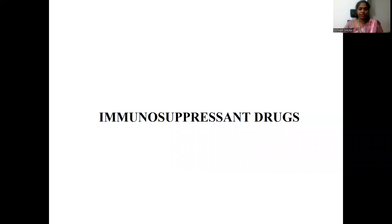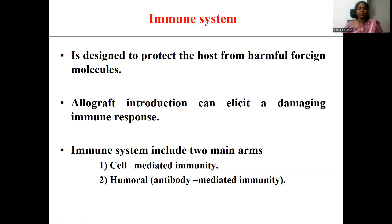In this topic we are going to discuss about immunosuppressant drugs. Immunosuppressant drugs are drugs which suppress the immune system. The immune system needs to be suppressed whenever there is allograft transplantation — the transplantation of an organ from a donor to a recipient. The recipient might recognize the graft as a foreign particle and try to elicit an immune response, bringing about rejection of the graft. So there is a need to suppress the immune system and achieve graft acceptance.